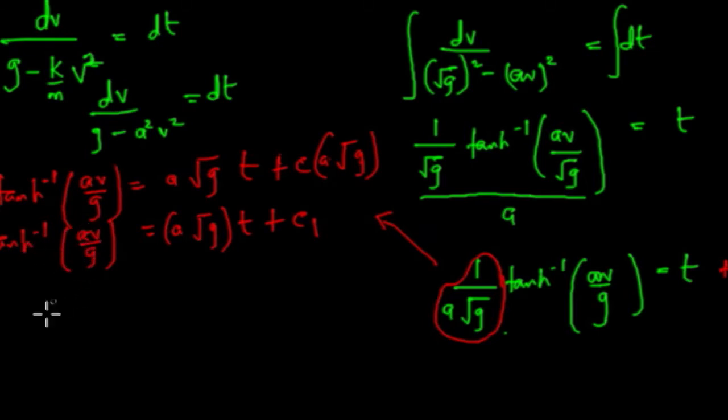So hyperbolic tangent of av all over g gives us this. So to find av over g, this implies that av over g equals, so this is the inverse.